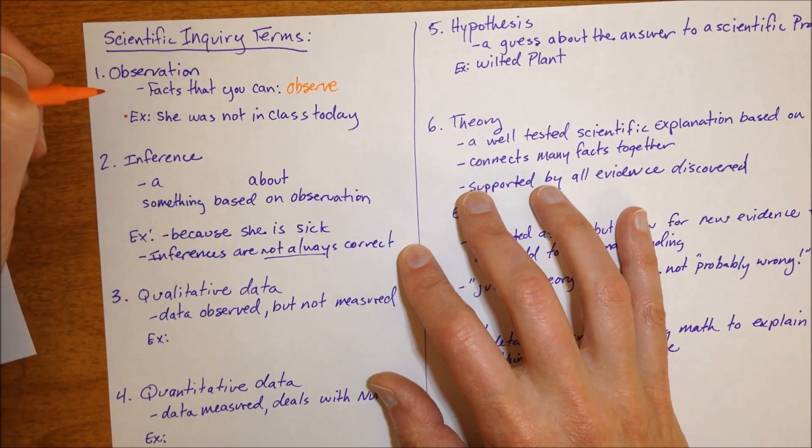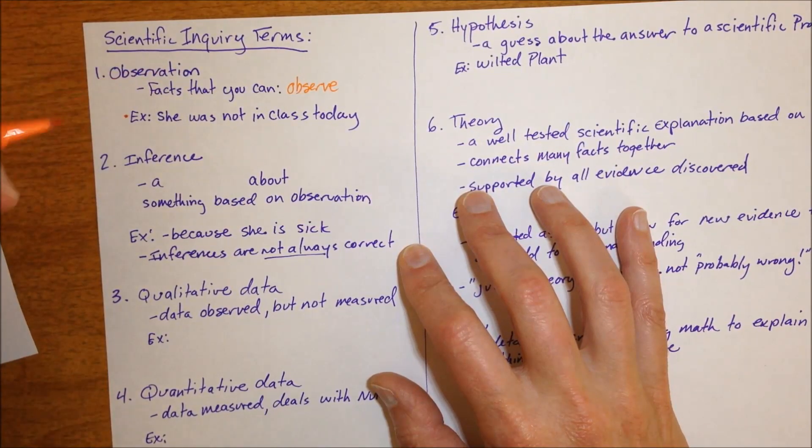So for example, she was not in class today is an observation because we can observe her absence. In contrast to that,